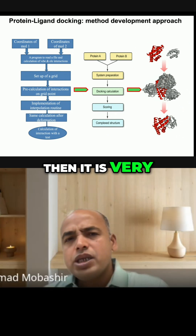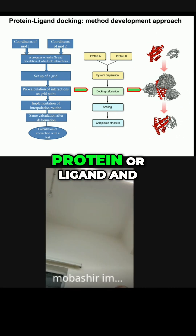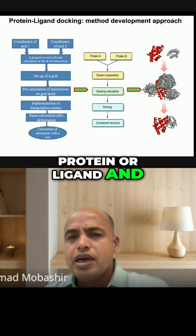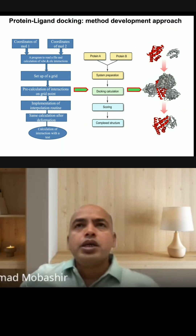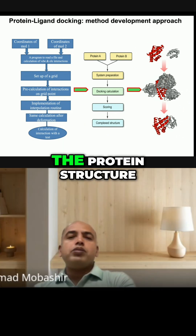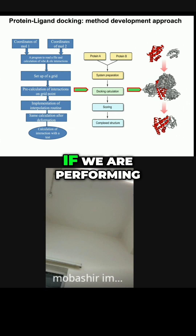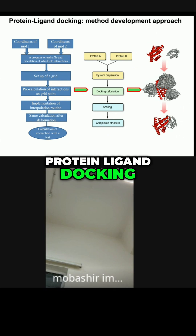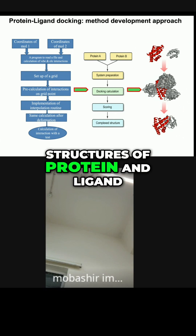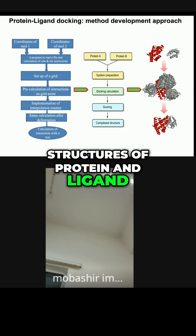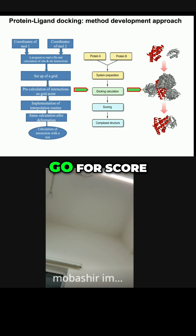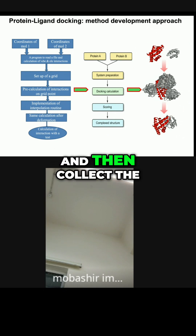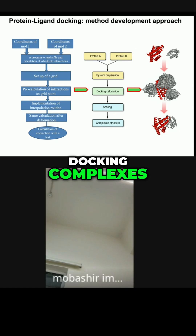It is very simple: collect the protein or ligand. When performing protein-protein docking, collect both protein structures; when performing protein-ligand docking, collect both the structures of protein and ligand, then go for system preparation, perform docking, score for the best score, and then collect the docking complexes.